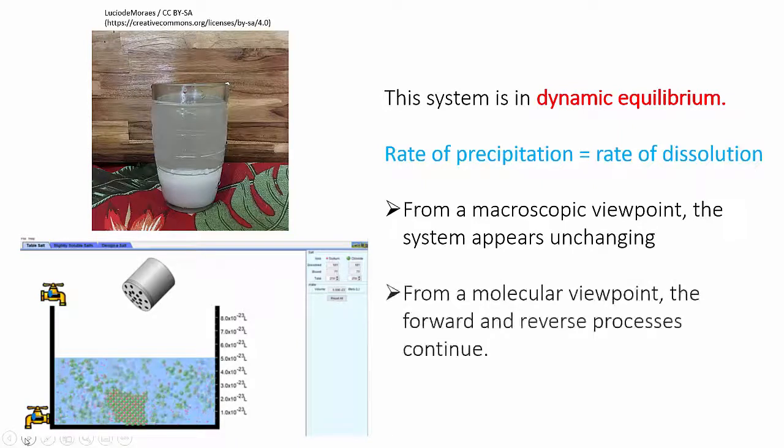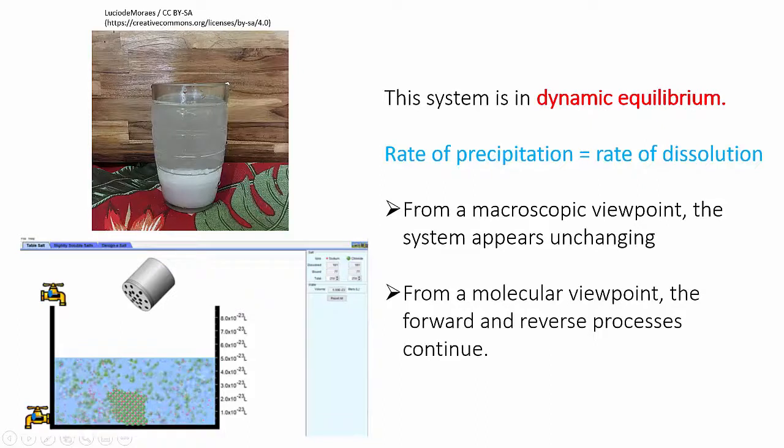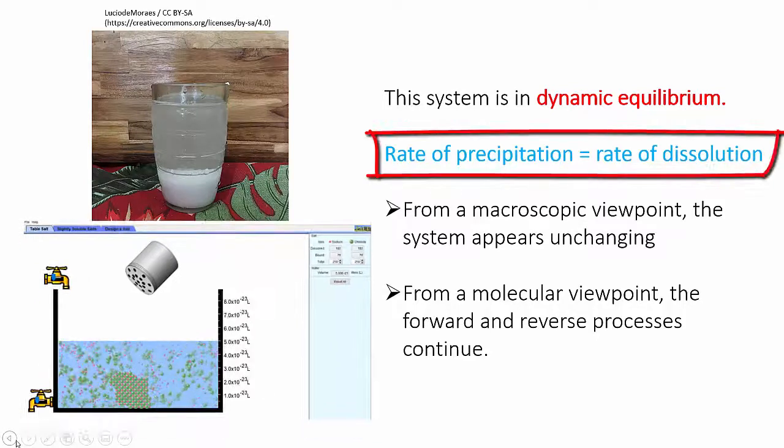But on a molecular level, it's obvious that the separate processes of dissolving and precipitation are continuing with great rapidity. It's just that the two processes are happening at the same rate, so the effect of one cancels out the effect of the other.